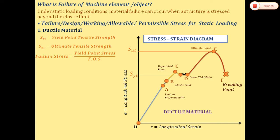Failure stress equals yield point stress divided by factor of safety. We consider factor of safety of 2, 3, or 4 as required. Optimization can change the factor of safety. In many automobile companies, they use factors of safety in the range of 1.1 to 1.2, whereas theoretically we consider 2, 3, 4, or 5. With SYT of 210 MPa and factor of safety of 2, the allowable stress is 105 MPa.